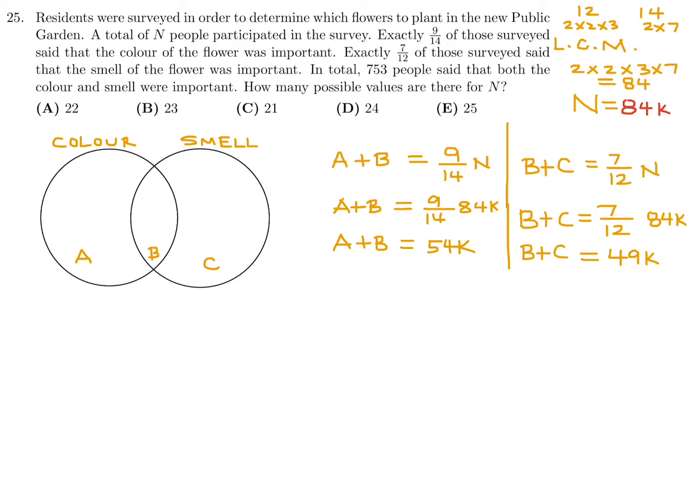All right, so now that that is established, we now look at this part, which says that 753 people said that both color and smell were important. That number represents b. So b is 753. So that means a is 54K minus b, which is 753. And c is 49K minus b, which is 753. So now let's complete this Venn diagram with the values. Well, b, they gave me in the question 753. a, I just figured out, was 54K minus 753. And c was 49K minus 753. Okay, great.